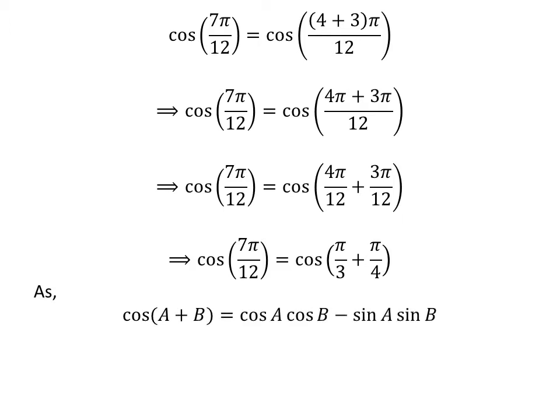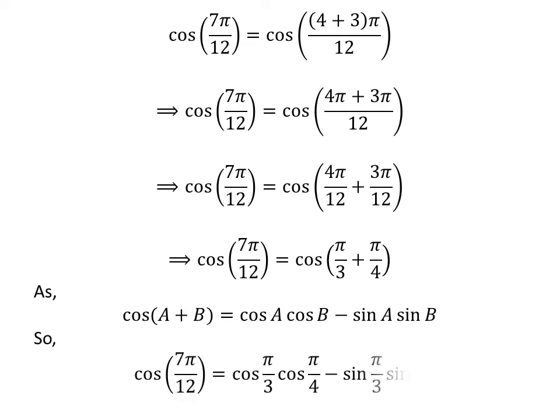We know the famous trigonometry identity: cosine of (a plus b) is equal to cosine of a times cosine of b minus sine of a times sine of b. Applying this, cosine of 7 times pi upon 12 is equal to cosine of pi upon 3 times cosine of pi upon 4 minus sine of pi upon 3 times sine of pi upon 4.